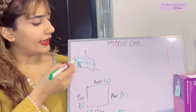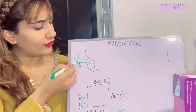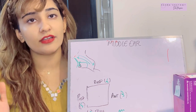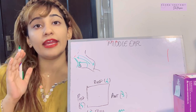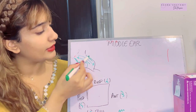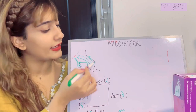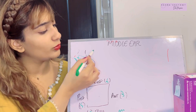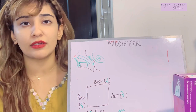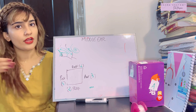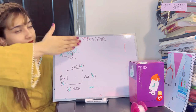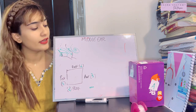The lateral wall of the middle ear is the tympanic membrane, connecting it to the external ear. The medial wall connects the middle ear to the internal ear. This makes complete sense — going from lateral to medial: external ear, then middle ear, then inner ear.